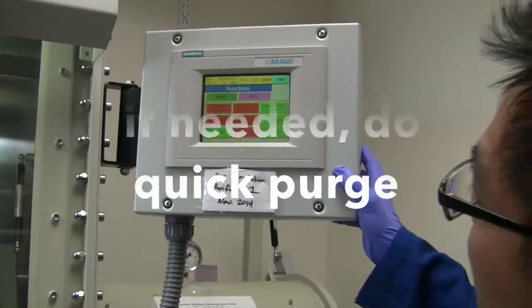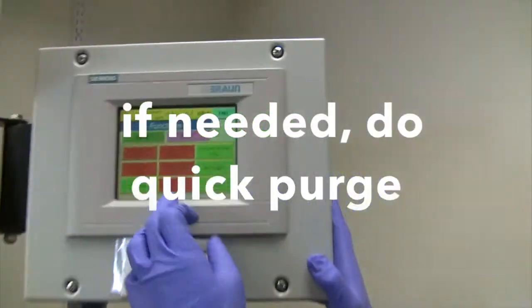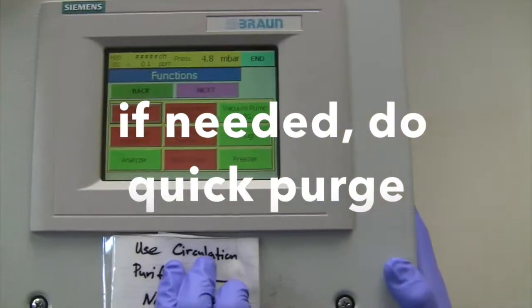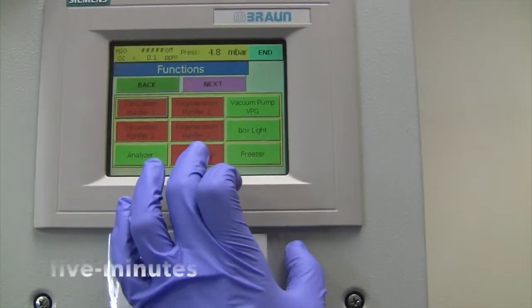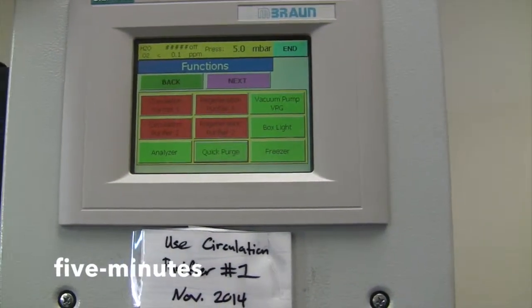If you are using volatile or halogenated materials, remember to do a quick purge for at least 5 to 10 minutes. The oxygen level should go down.